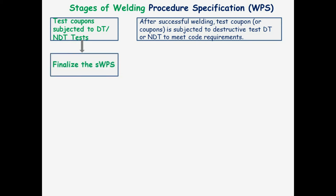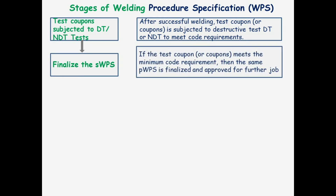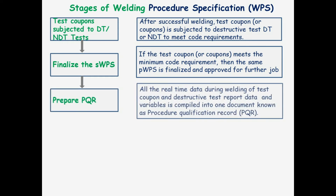Thereafter, finalize the PWPS. If the test coupon or coupons meet the minimum code requirement, then the same PWPS is finalized and approved for further job. Thereafter, prepare the PQR. All the real-time data during welding of the test coupon, destructive test report data, and variables are compiled into one document known as Procedure Qualification Record, PQR.